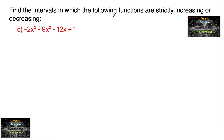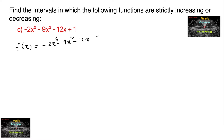Find the intervals in which the following functions are strictly increasing or decreasing. Given function, let us consider f(x) = -2x³ - 9x² - 12x + 1. To find the intervals in which the function is decreasing or increasing, we should consider f'(x) = 0, whereby the behavior of the graph changes at this point.